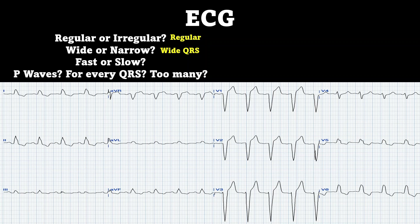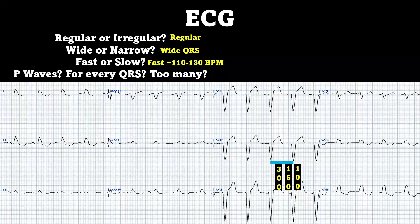Now let's see — is this going to be a fast or slow rhythm? Here you can see that the rate is approximately 110 to 130. So anything over 100, that's going to be fast.